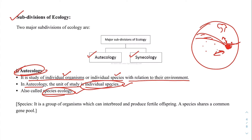There is also a definition of species here: species is a group of organisms which can interbreed and produce fertile offspring. A species shares a common gene pool — this is something to remember, and we will cover it in future videos.